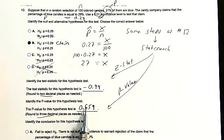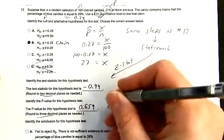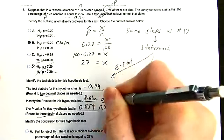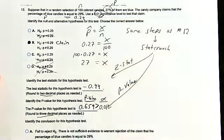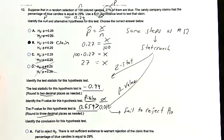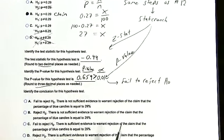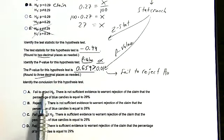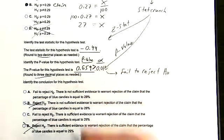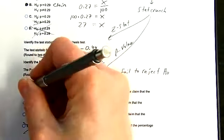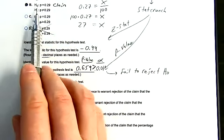Compare the p-value to alpha (0.01). The p-value 0.65 is clearly bigger than 0.01, so we fail to reject H0. Their claim is with H0, so we're failing to reject the claim. 'There is not sufficient evidence to warrant rejection of the claim that the percentage of blue candies is equal to 29%' — that's answer A.